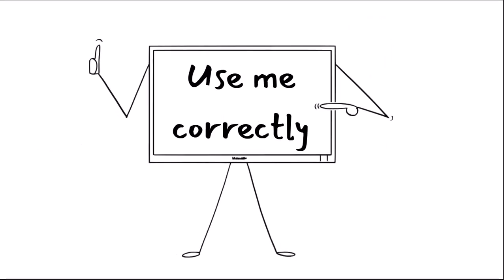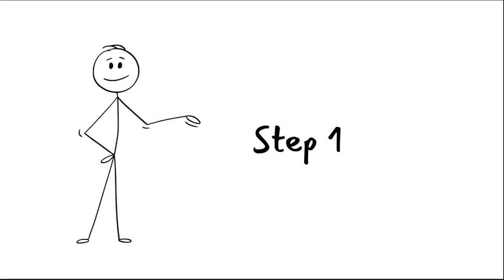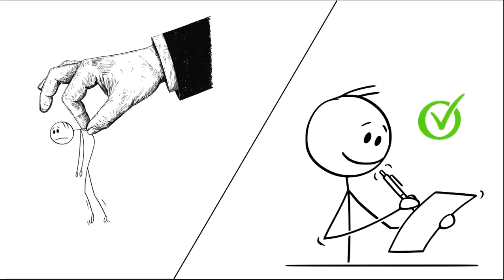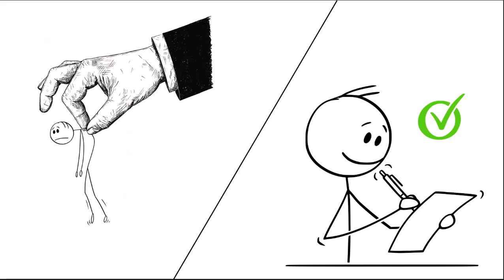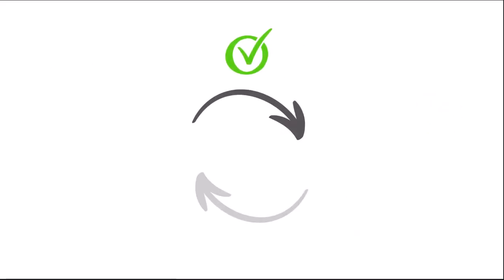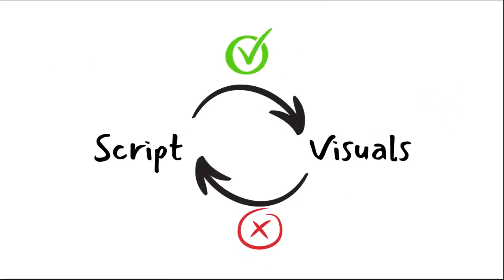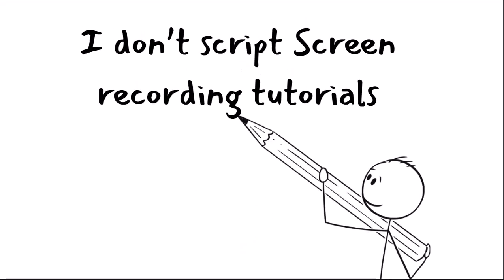So be clear about where you would use stickman animations before you start your project. Now, let us understand the first step in creating the animations. The most important thing in a stickman animation video is not finding the stickman graphics. It is writing a tight script that communicates the message with clarity and engagement. Because it is the script that determines the visuals you would use and not the other way around.